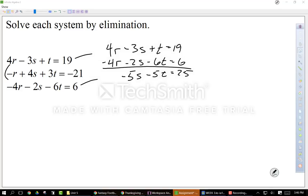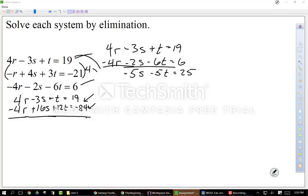Then let's multiply this middle one by 4, and if we multiply that one by 4 and then add it to the top one, it'll then cancel. So let's rewrite the top one as 4R minus 3S plus T equals 19. Let's multiply the middle one by 4, so I get negative 4R plus 16S plus 12T equals negative 84. So when I add these two equations, I get 13S plus 13T is equal to negative 65. So now let's rewrite that up here underneath my other equation with the S's and T's in them. So 13S plus 13T equals negative 65.